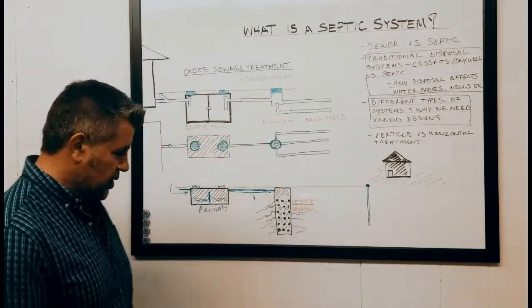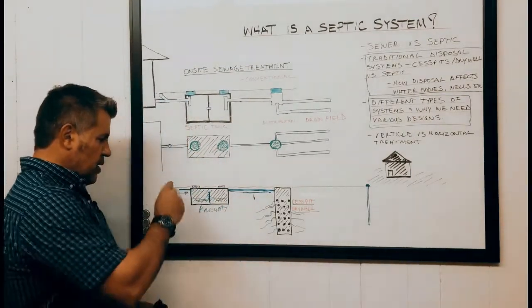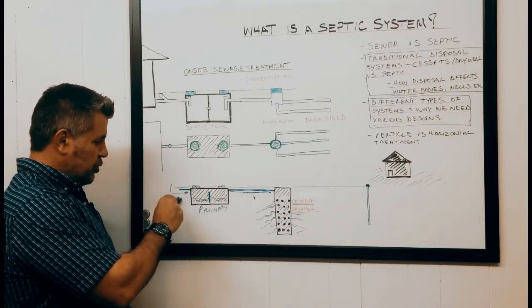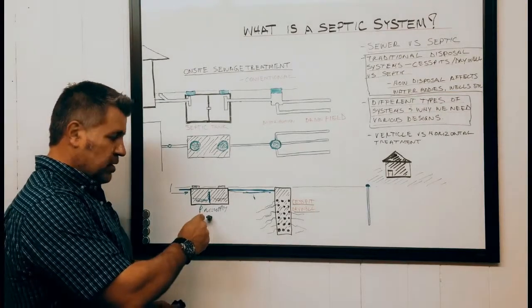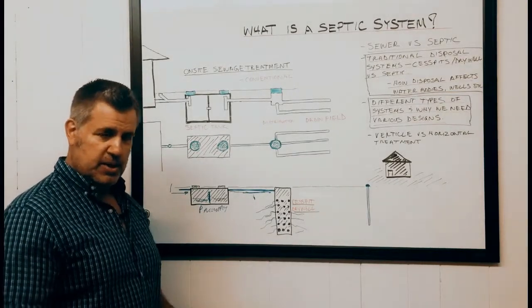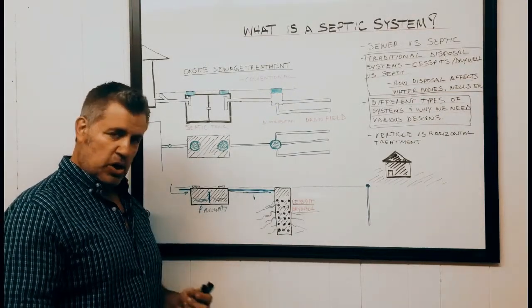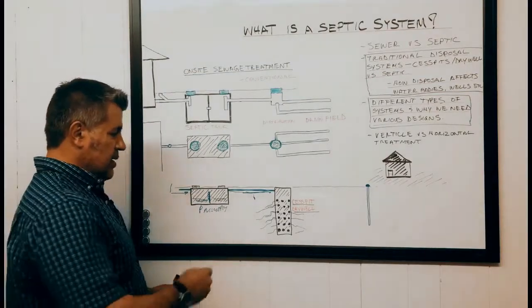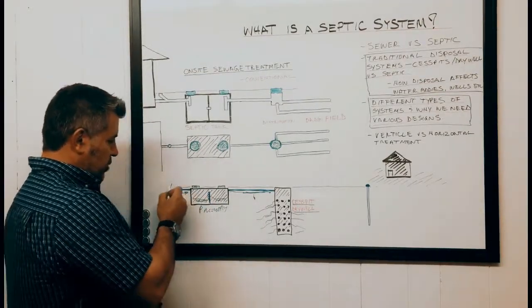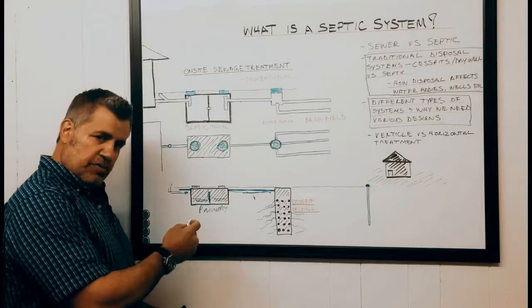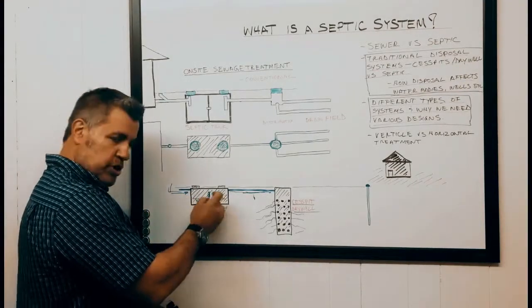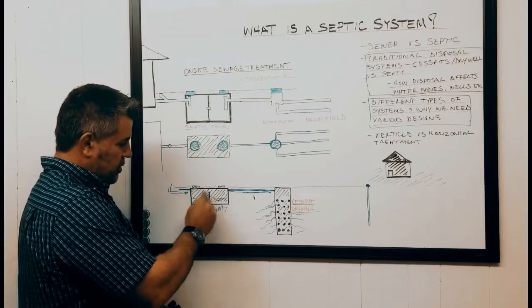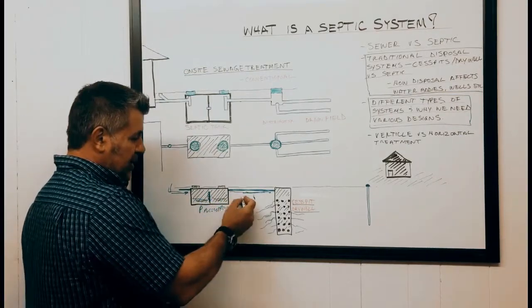Traditionally, we would have our raw sewage enter a septic tank where the septic tank would be responsible for the primary treatment, which means the separation of solids, fluids, and fats. We would flush our toilet or use our fixtures, that raw sewage would enter our septic tank for separation.